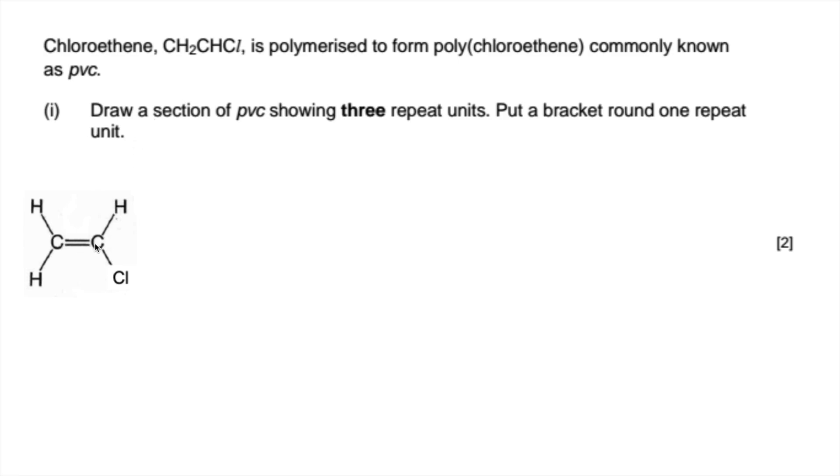We're going to have six carbons essentially in a line, so we'll get that. Notice I've put the chlorines here on the top. There's no difference between that chlorine there or there, and the repeat unit could be any one of those there.